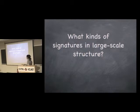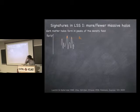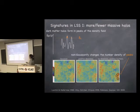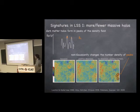So given these types of initial conditions, how would they look in large-scale structure? The first signature we'll talk about is primordial non-Gaussianity generating more or fewer massive dark matter halos. This can be understood simply: a dark matter halo forms when a fluctuation in the density field is above some threshold for collapse. Non-Gaussianity changes the number density of regions above the collapse threshold — with positive skewness or positive kurtosis, there are more extreme positive fluctuations, which is where dark matter halos form.